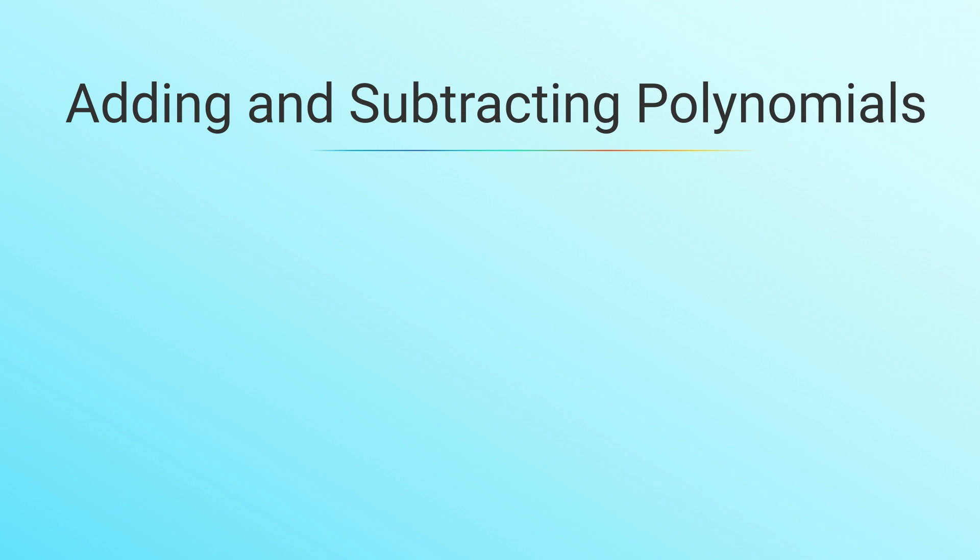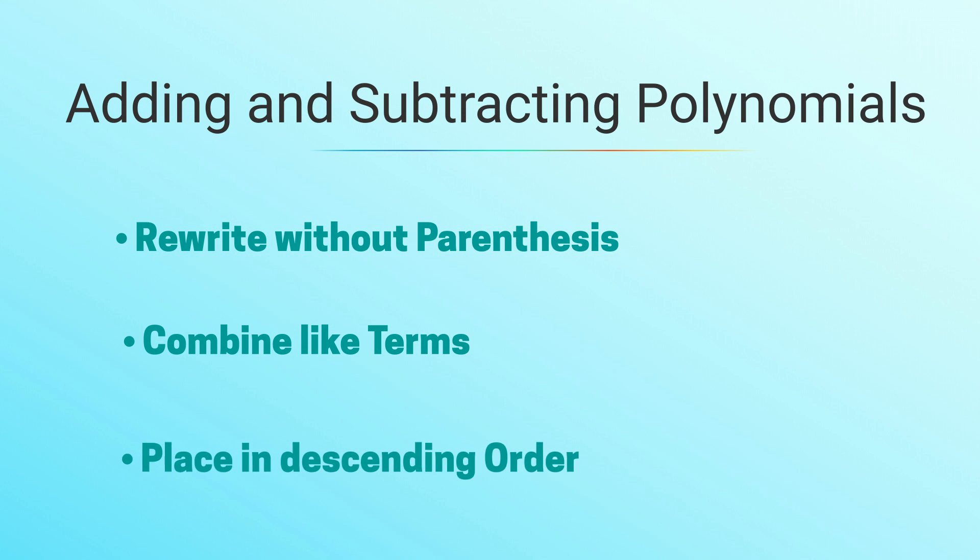Let's follow these steps. First, we're going to rewrite the question without parentheses. In order to do this, you have to distribute the positive and negative sign. Then we are going to combine like terms. And then we're going to write the polynomial in descending order.